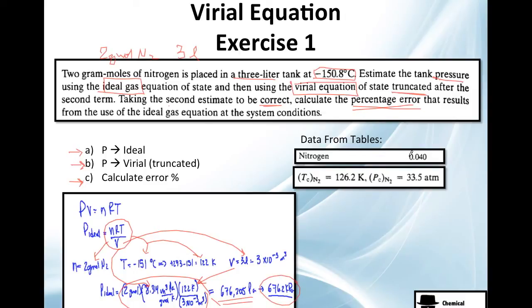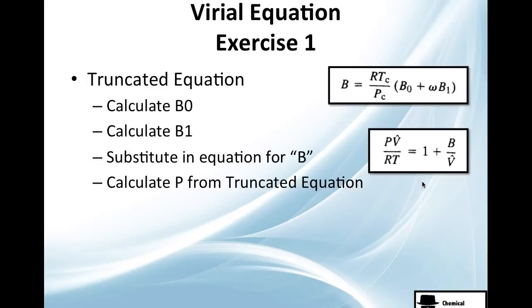They give us this, well actually they don't give it to us, but we find this from the book, the Pitzer factor or acentric factor, and the critical temperature and pressure of nitrogen. That's good. Now, for the truncated equation, we need to calculate B0, then calculate B1, then calculate B, and after that we need to find P from the truncated equation.